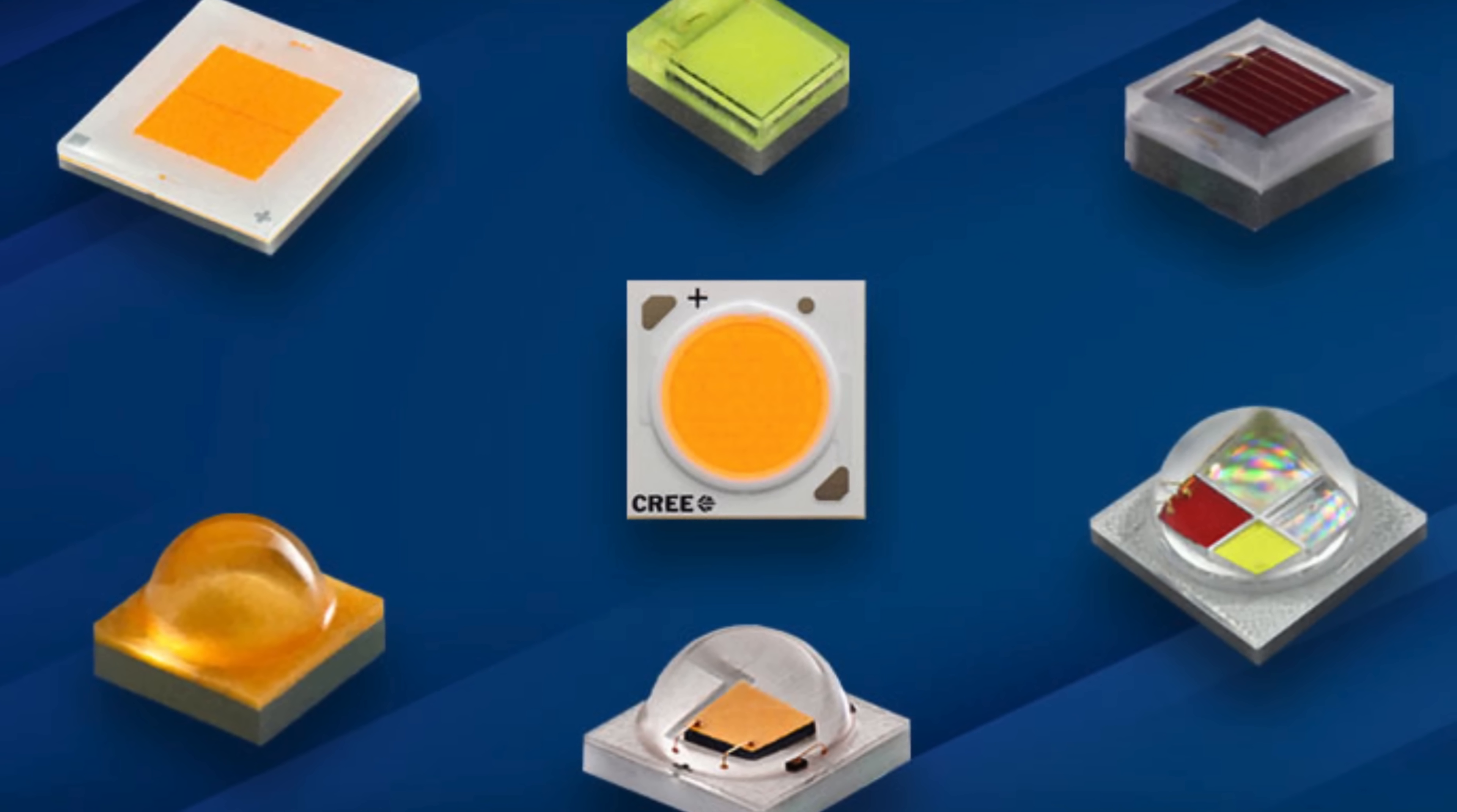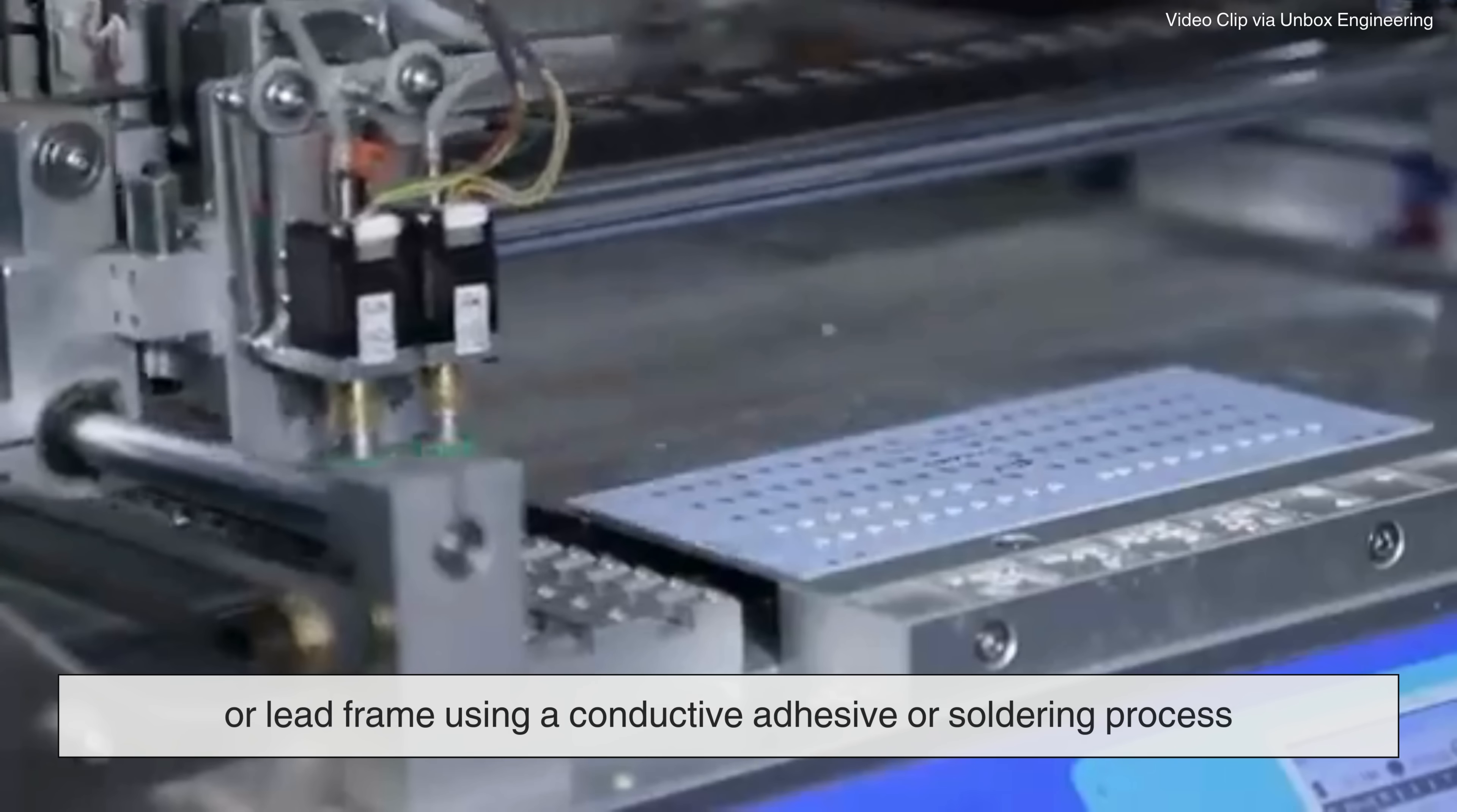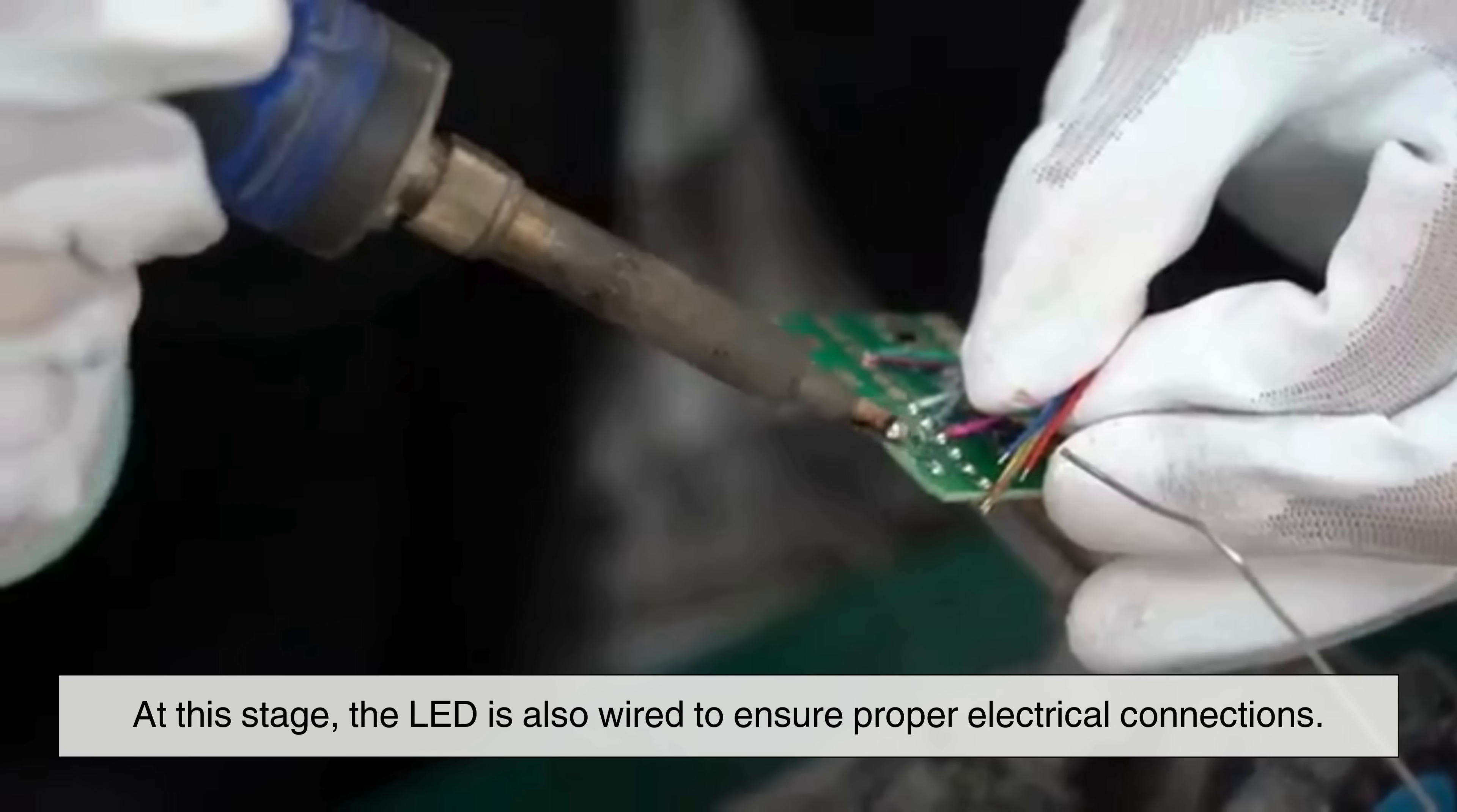Once the LED chips are ready, they must be mounted onto a base to form a functional LED package. This is typically done by attaching each LED die to a small circuit board or lead frame using a conductive adhesive or soldering process. The circuit board serves as the foundation for the LED, providing both electrical connections and a means of dissipating heat.